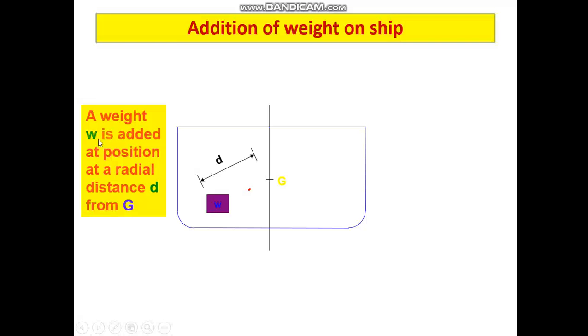Similarly, you can consider a case where a weight w is added at a position which is at a radial distance d from G. Your center of gravity initially is located here. Radially, if you move at a distance d, at somewhere at this location, you see on a ship in the side hull you have ballast tanks where you add ballast water.